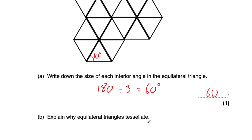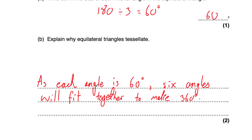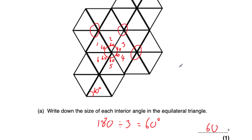Part B says explain why equilateral triangles tessellate. Let's consider a point where we've got six equilateral triangles that fit together perfectly - triangle one, two, three, four, five, and six. The reason is each of these angles is 60 degrees: one 60 degree angle, another, another, another, another, another - and six 60s is 360. So that's why equilateral triangles tessellate: six equilateral triangles can join together at a point and make 360 degrees, which we know is the angles at a point. As each angle is 60 degrees, six angles will fit together to make 360 degrees, so there is no gap.